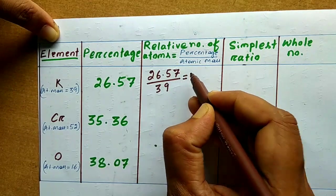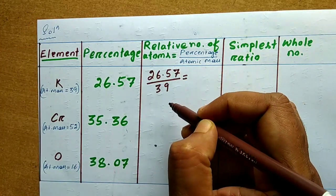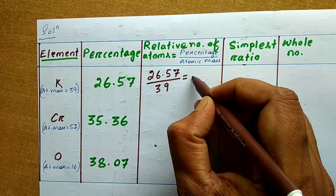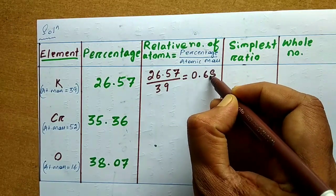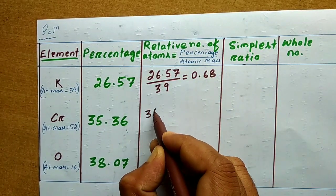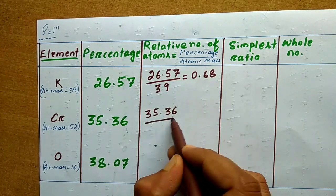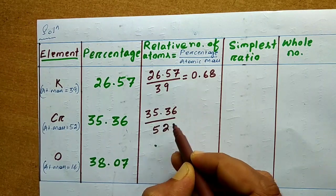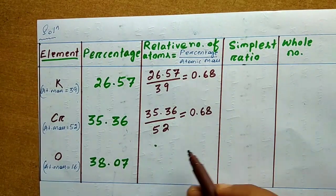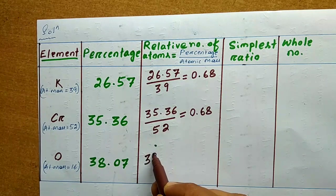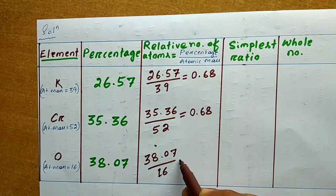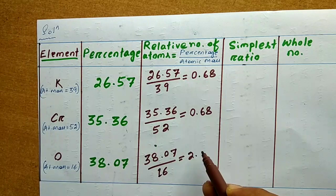Simplifying 26.57 divided by 39 gives approximately 0.68. The second is 35.36 divided by 52, which also gives 0.68. The third is 38.07 divided by 16, which equals 2.37.